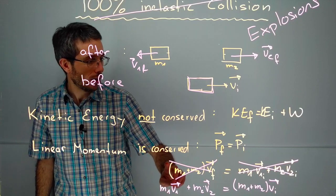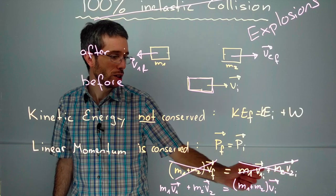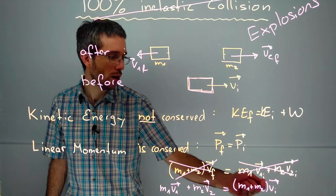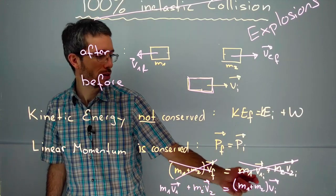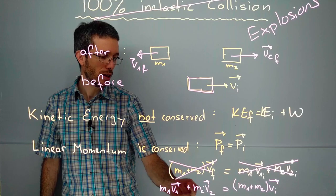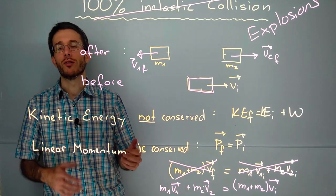For the inelastic collision, we had two parts moving initially becoming one part at the end. Now we have to flip this around. We had one object with a total mass traveling at some initial velocity, which then rips apart and gives us two separate objects traveling at each their own velocity.